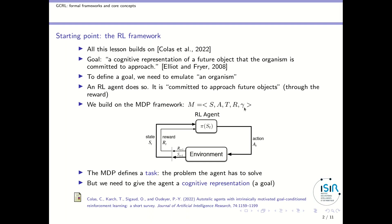The point that Cédric makes very clear is that the MDP defines what we call a task, which is the problem that an agent has to solve. But if we need to include this cognitive representation from the definition, we need to give the agent this cognitive representation — which will be a goal — and we will see how to do this on the next slide.